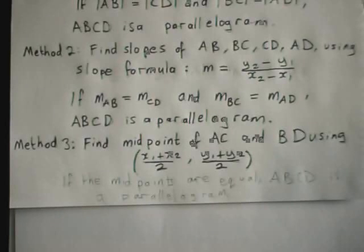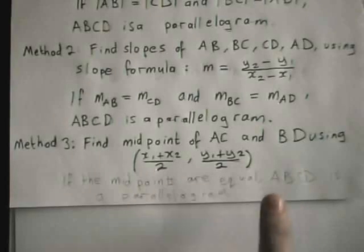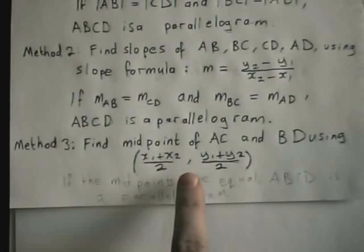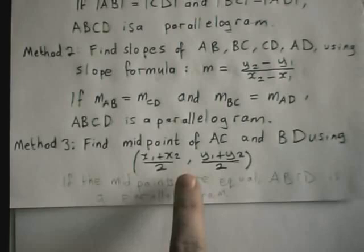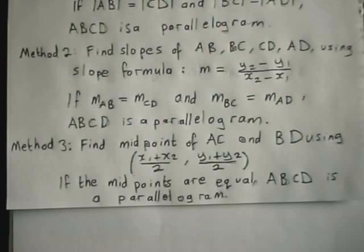So here's the method: find the midpoint of the two diagonal lines AC and BD using the midpoint formula, which is on page 18 of the formula and tables book. The qualifying statement is that if the midpoints are equal, then ABCD is a parallelogram.